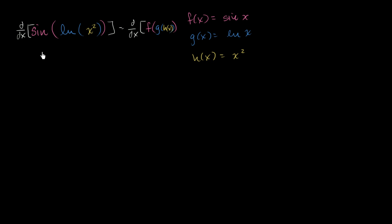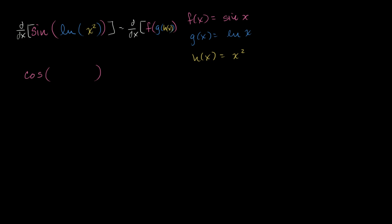I want to think about how to do this in my head without writing all the chain rule notation. The derivative of the outer function f with respect to the level of composition directly below it: the derivative of sin(x) is cos(x), but instead of cos(x), it's going to be cosine of whatever was inside — cosine of the natural log of x squared.